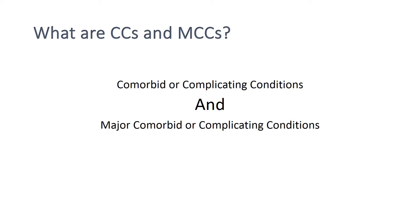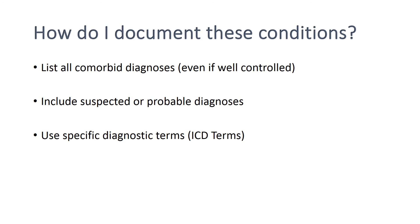So what are these CCs and MCCs? Those are comorbid or complicating conditions and major comorbid and complicating conditions. You need to document these by listing all comorbid diagnoses, even if well-controlled, include suspected or probable diagnoses, and use specific diagnostic terms — specifically the ICD-10 terminology.